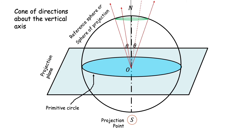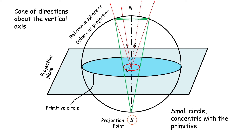Let us consider the special case of a cone with the north-south axis as its axis. Such a cone cuts the sphere in a green circle which is horizontal and parallel to the projection plane. When we join this green circle with S to project it stereographically, we get a green cone which is a right circular cone. The stereographic projection of the green circle is the section of this green cone by the projection plane, giving a small red circle that is concentric with the primitive.